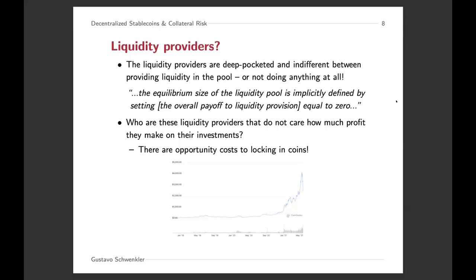In terms of liquidity provision, one of the assumptions is that liquidity providers have deep pockets — an infinite supply of assets — and are also indifferent between providing liquidity in the pool and really not doing anything else. One statement made in the proofs is that the equilibrium size of the pool is implicitly defined by setting the payoff of liquidity provision to zero. I started thinking about who these liquidity providers are that are indifferent between not doing anything and providing liquidity. It's costly to provide liquidity in this space — the price of Ethereum increased by a factor of 10 over the sample period, so it doesn't seem that liquidity providers should be indifferent.